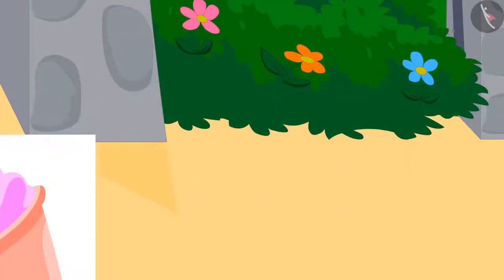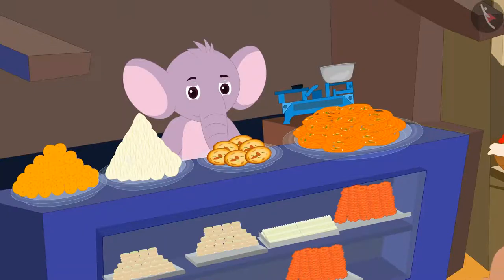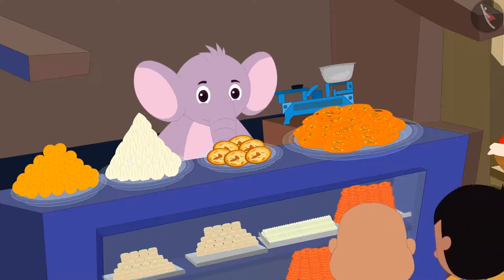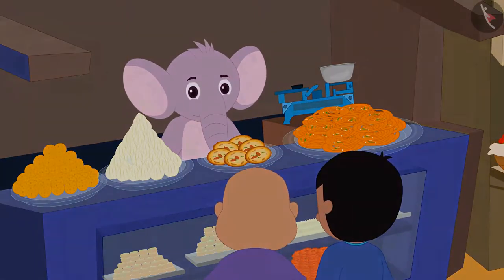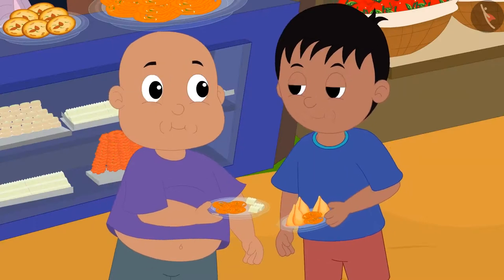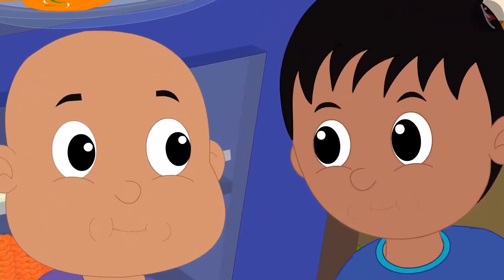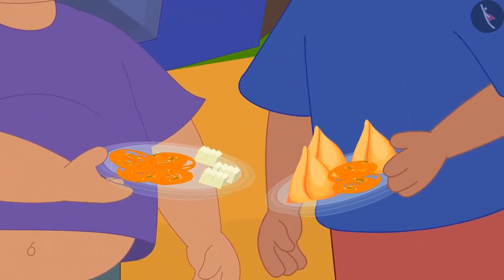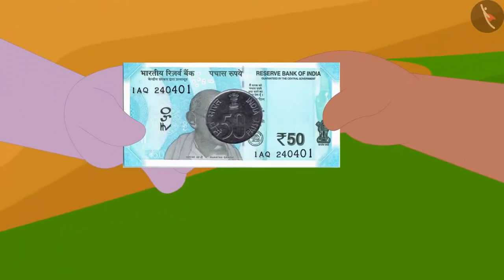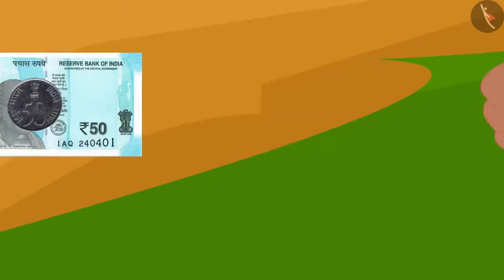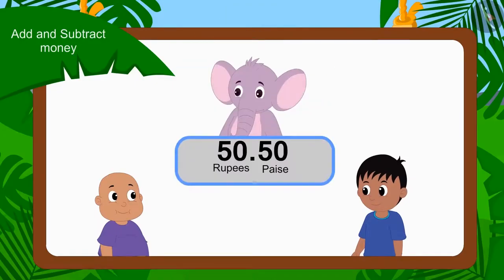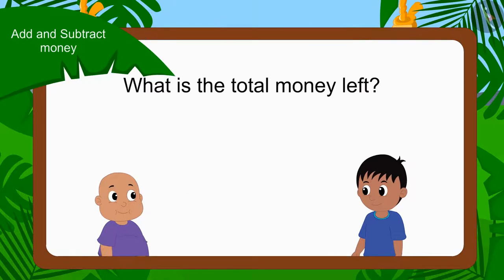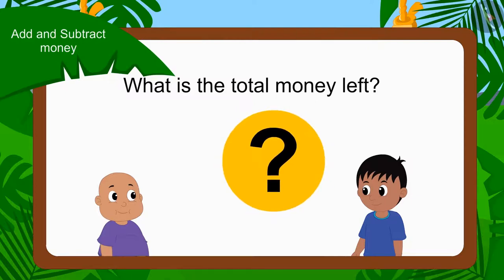They paid Babban for the ice cream and later reached Appu's sweet shop. They ate a stomach full of samosa, jalebi, and barfi. If they gave Appu a total of 50 rupees 50 paise for all the things, can you tell how many rupees are left with both of them now?